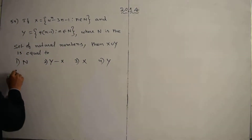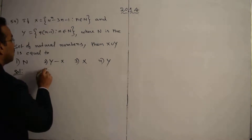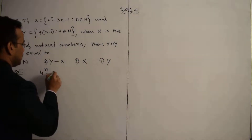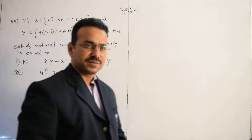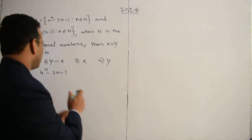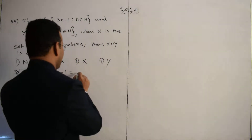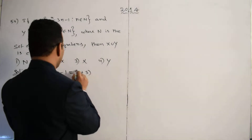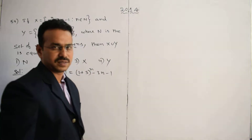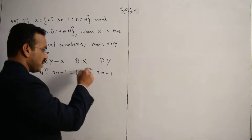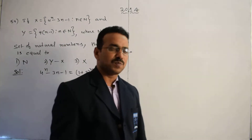Solution: take the expression 4^n minus 3n minus 1. It is an application of the binomial theorem. So this equals (1+3)^n minus 3n minus 1, which is in the form of a binomial expansion, that is (x+y)^n.